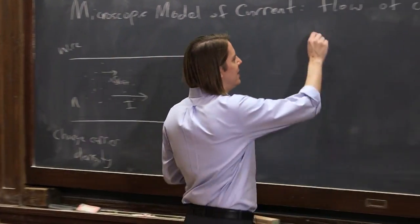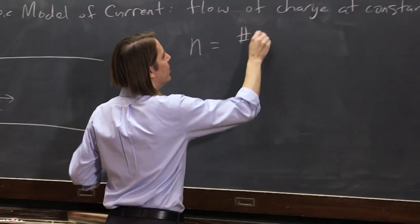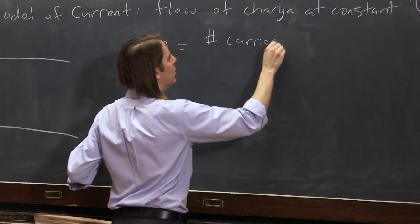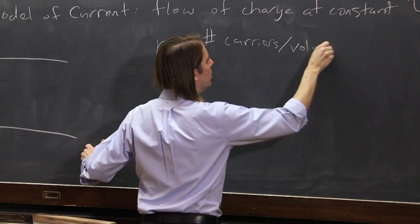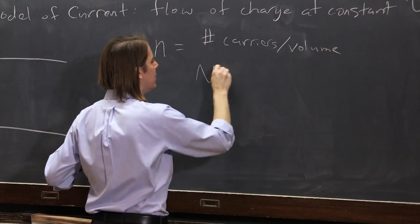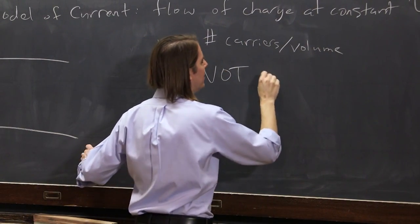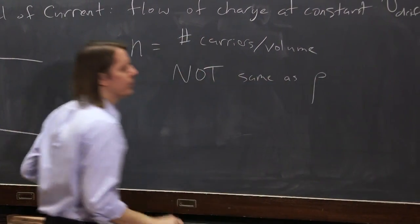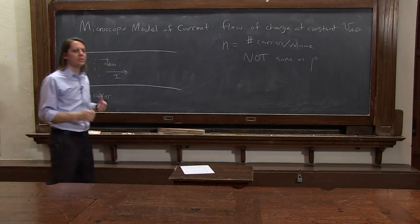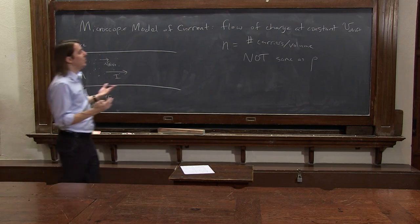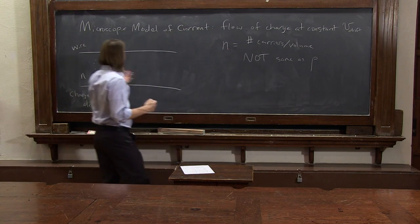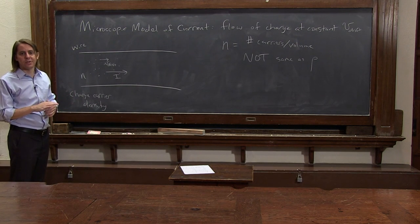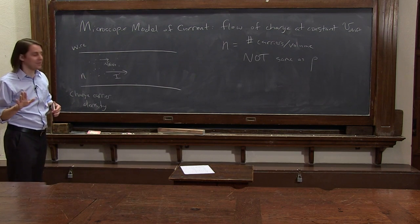One thing to point out is that n is the number of carriers per unit volume. It is not the same as rho. Remember rho? Rho was the charge density. You might say, if it's the number of carriers per unit volume and they're charged, then it must be basically rho, that this wire is charged. Well, that's not the case.